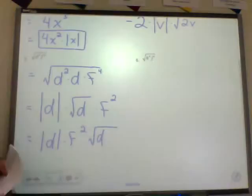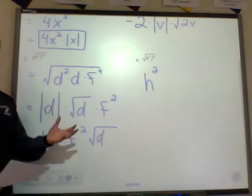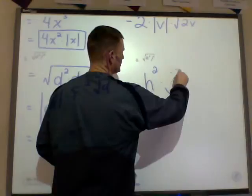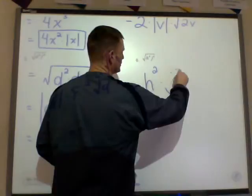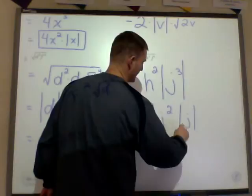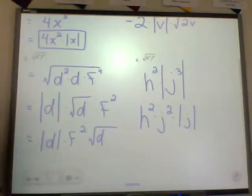Finally, h to the fourth j to the sixth. I pull out h to the fourth — that's h squared times h squared — so h squared comes out with no absolute values needed. But j to the sixth gives three j's — a j cubed — so I need absolute value symbols on that. Normally we'd write it as h squared times j squared, and then put the last j in absolute values.